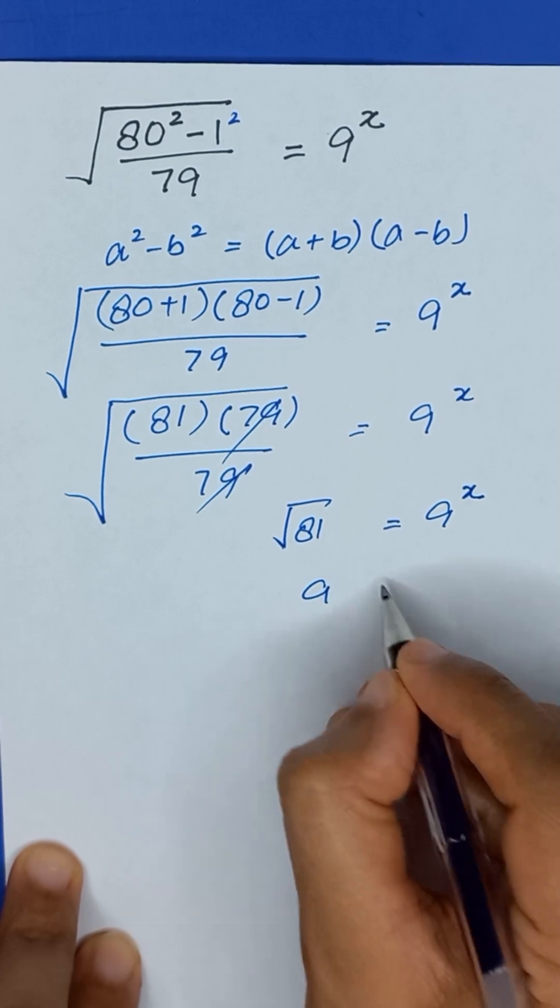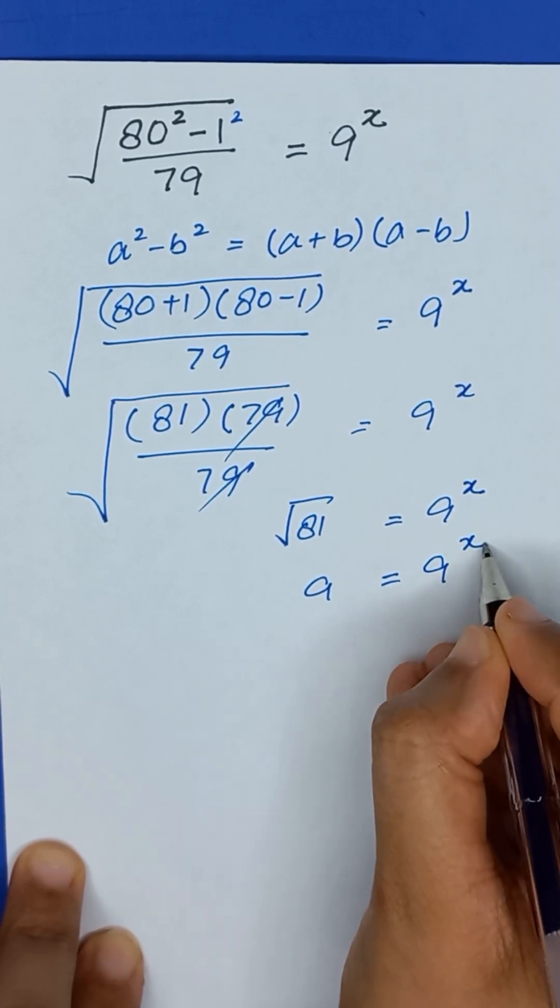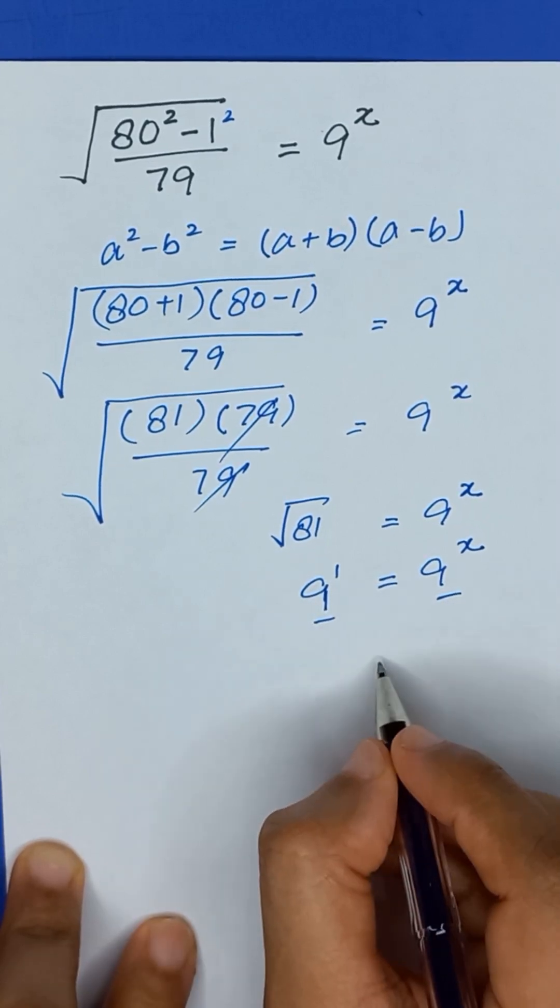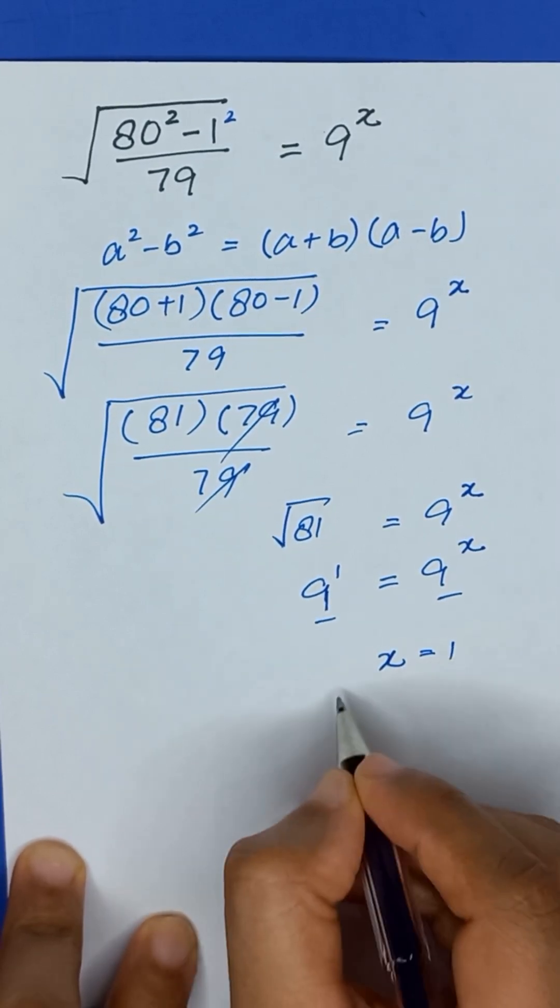Square root of 81 will be 9, is equal to 9 to the power x. It is same as 9 to the power 1. Bases are same, so we can equate its powers. So the value of x will be equal to 1.